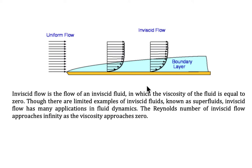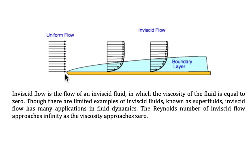Boundary layer can be imagined like this. What you need to know is that we are discussing about boundary layer that occurs on a thin, flat plate like this. The formation can be described like this. Let's say we have a uniform flow from left to right here. We draw the uniform flow with arrows like this, and the arrows need to be the same because it shows that it is uniform flow and there is no resistance at this area.